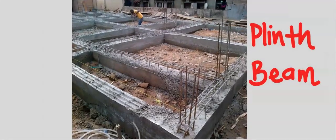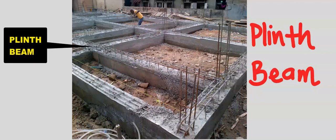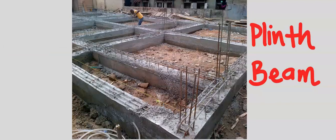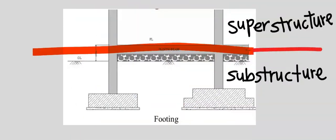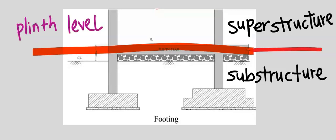When a tie beam exists close to the foundation on the ground, it is given a special name known as a plinth beam. The plinth beam is usually the first beam constructed immediately after the foundation. It usually exists between the superstructure and the substructure, and this level is called the plinth level — where the substructure ends and the superstructure begins. Tie beams that exist at this level are called plinth beams.